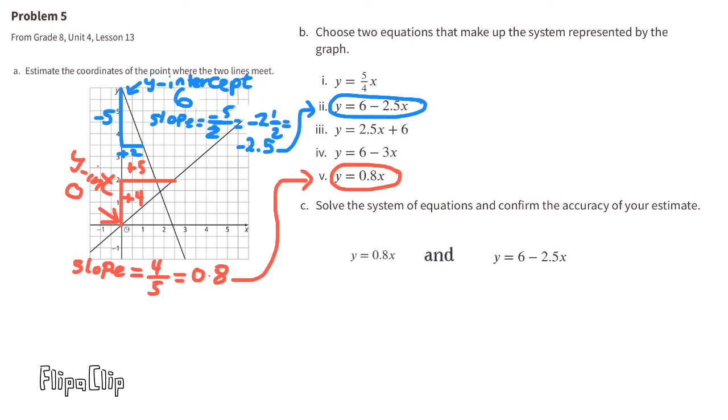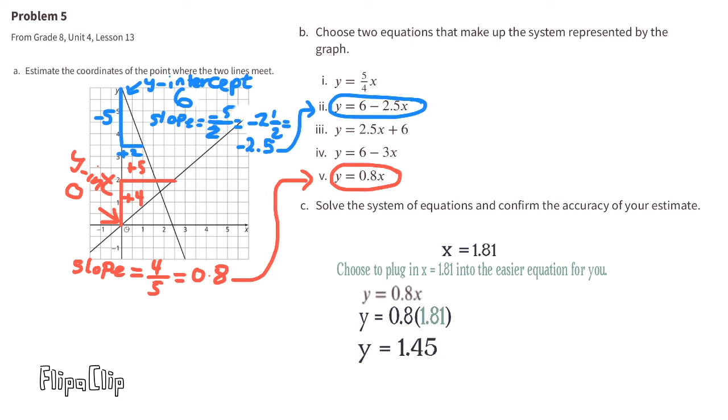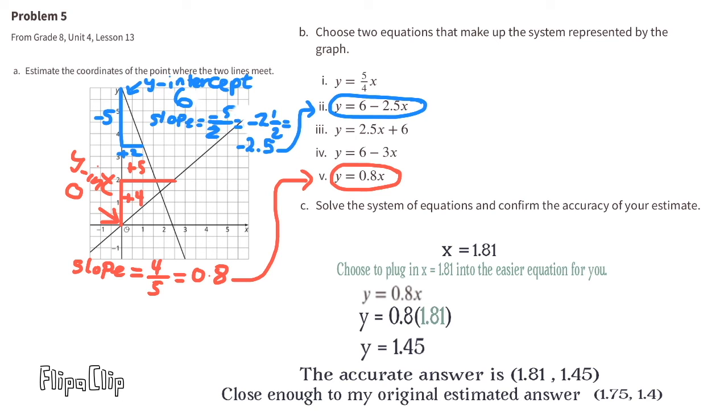Let's use those two equations as a system of equations. And we can substitute the 0.8 X for the Y. So the second equation would read 0.8 X equals 6 minus 2.5 X. Add 2.5 X to both sides. Divide both sides by 3.3. And 1 X equals 1.81. Now we get to substitute the X in the other equation with a 1.81. So it reads Y equals 0.8 times 1.81. Y equals 1.45 or 1 and 45 hundredths. The accurate answer is X value 1.81 and Y value 1.45. I think our estimate is pretty close. My estimate was 1.75 for the X value and 1.4 for the Y value.